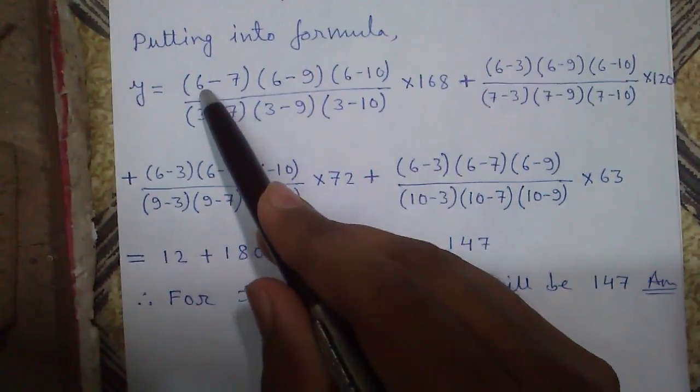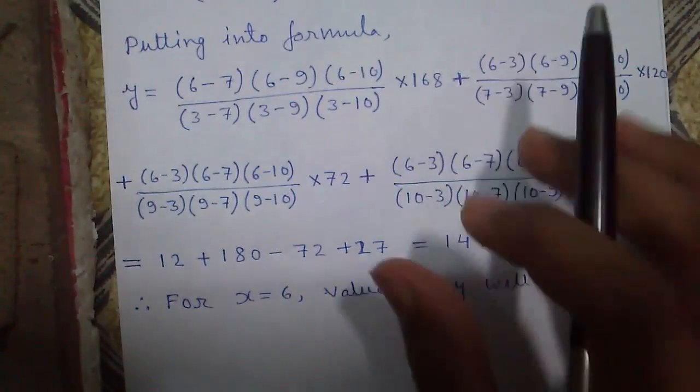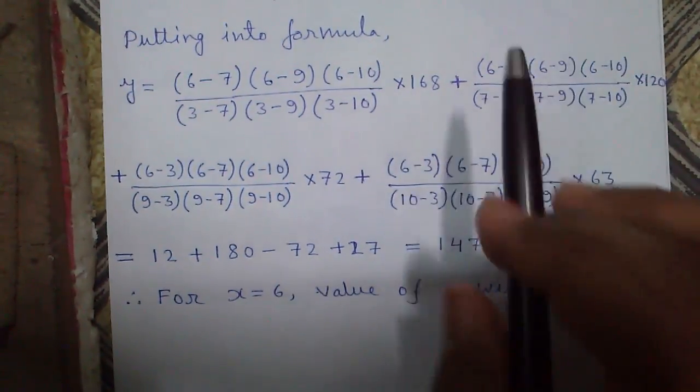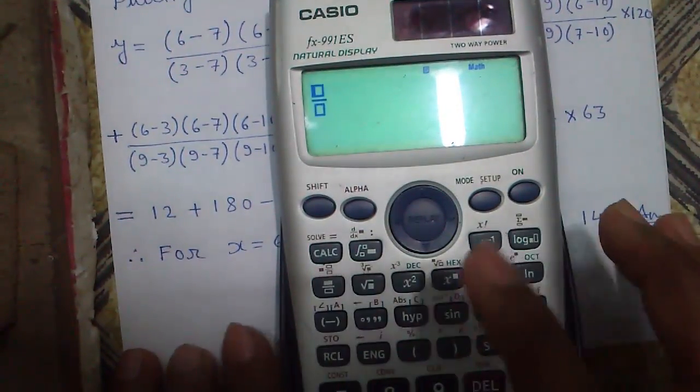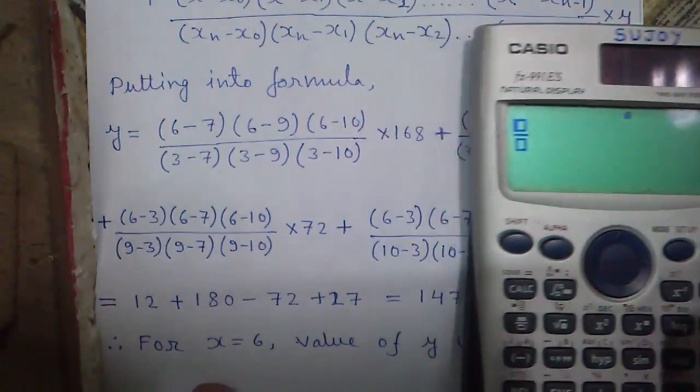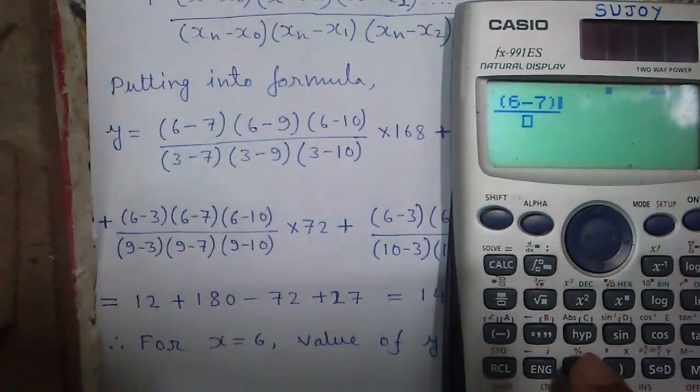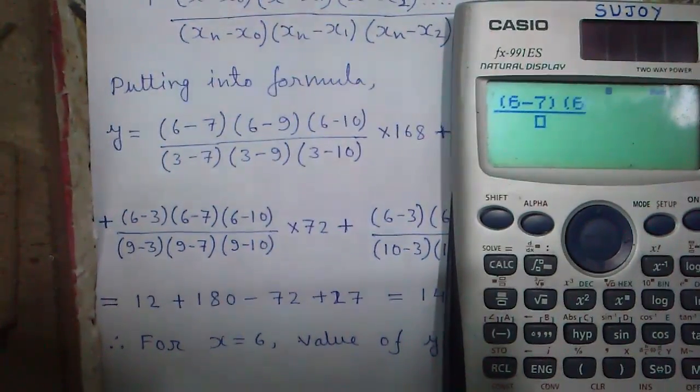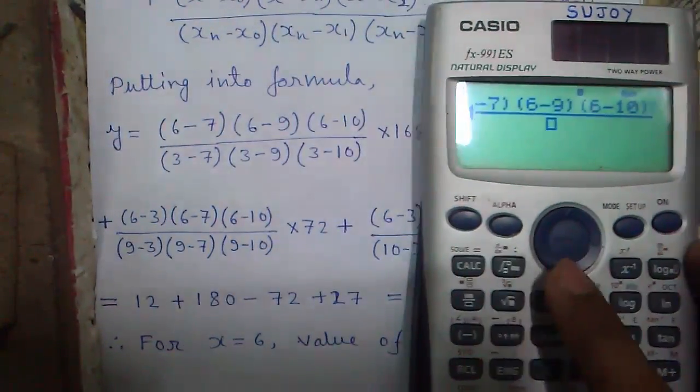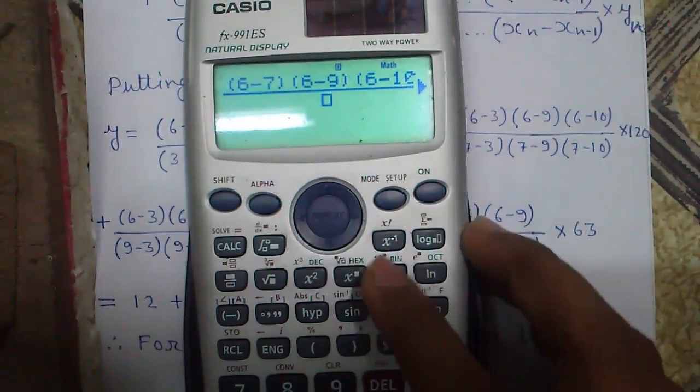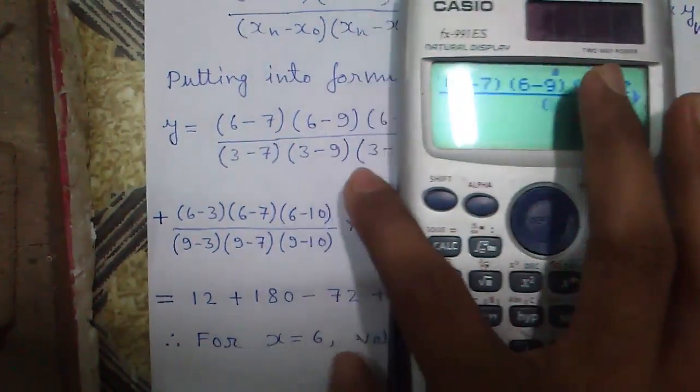Now you can individually find the terms and then add them, or the easiest part is that you can use your calculator. So how? I will tell you. Press the fractional button, then place the first bracket. So 6 minus 7, first bracket, 6 minus 9, and 6 minus 10.